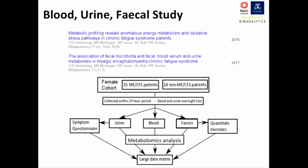We looked at only a female cohort, because we get such large differences between males and females when it comes to metabolite changes. We looked at 35 patients versus 24 non-ME-CFS patients — we say non-ME-CFS because healthy is such a hard thing to define, but we wanted people who weren't diagnosed with ME-CFS and were relatively healthy. We looked at urine, blood, and fecal samples, and took symptom questionnaires from the patients at the time, all collected within a 24-hour period.